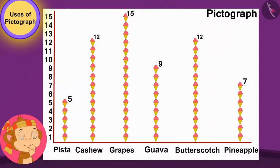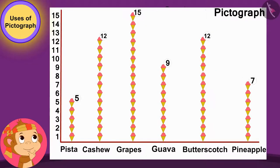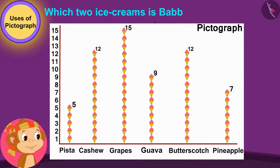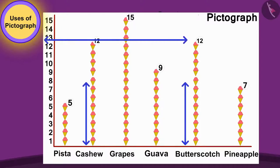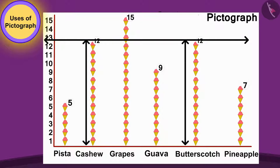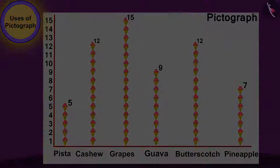Now, Babban looked at the pictograph once again and thought these two ice creams have been liked by exactly the same number of people. Children, can you see the pictograph and find out which two ice creams Babban is thinking about? Well done, children. Your answer is absolutely correct. Cashew and butterscotch ice cream lines are of the same height. Therefore, the number of people who like cashew and butterscotch ice cream is the same.